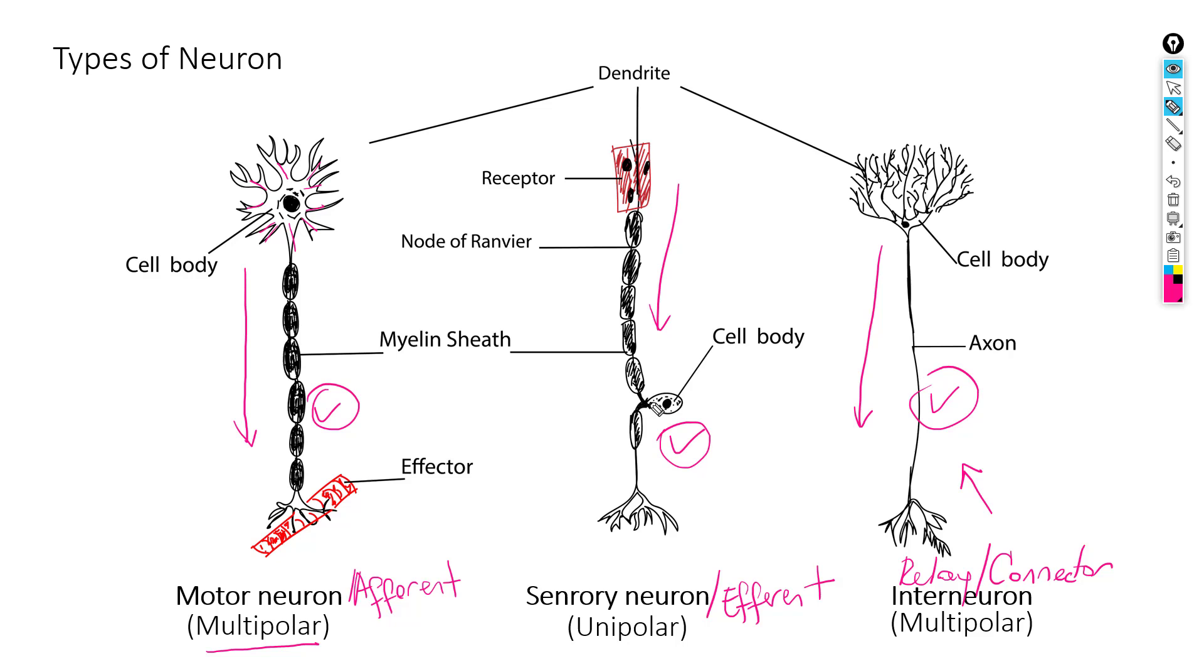But in the second one here, there is only one projection protruding from the cell body and then divides into two. In this case, this is gonna be unipolar neurons. And the last one here has many extensions given rise by the cell body. This is also gonna be multipolar.